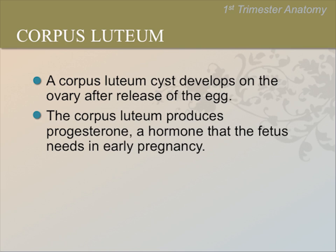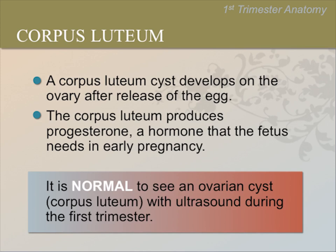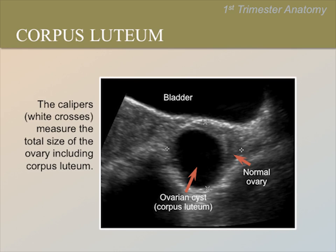Often you may see a corpus luteum cyst on the ovary during the first trimester. The corpus luteum is a cyst that develops on the ovary after the egg is released. It makes progesterone that helps to support the early pregnancy. It is normal to see an ovarian cyst with ultrasound during the first trimester. The corpus luteum often appears as a simple cyst. A simple cyst contains only fluid, so it appears black. The black sac corresponds to the corpus luteum. The grayer tissue to the upper right of the sac is actually normal ovarian tissue. The calipers measure the total size of the ovary, including the corpus luteum.